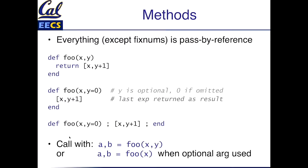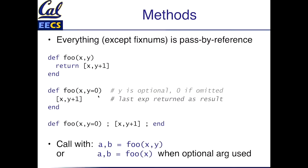Methods. Everything is passed by reference, everything except integers. I can define a function foo that takes two arguments and returns an array or list of two things. I can define functions with arguments that have optional values - so if I don't supply a value for the second argument, it gets zero by default. When I call a function that returns a list of things, I can assign the result either to an array and dereference it, or I can assign the result directly to individual variables. I'm giving you a very high-level whirlwind tour of the language so that you get used to reading code in a language you maybe haven't seen before.